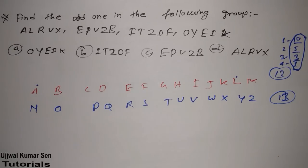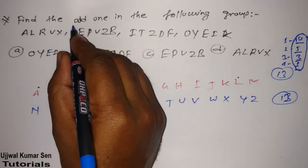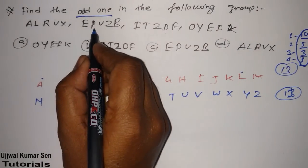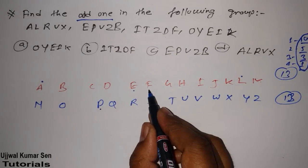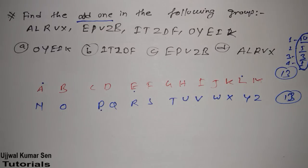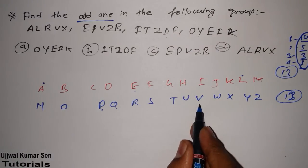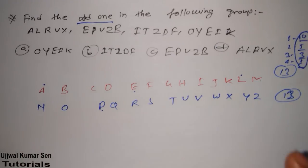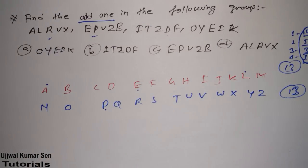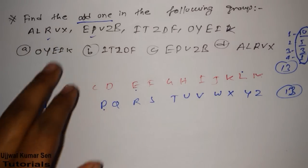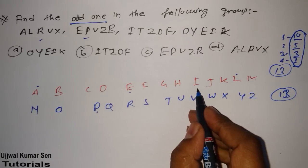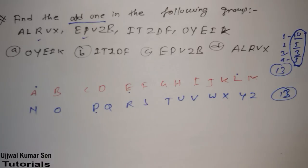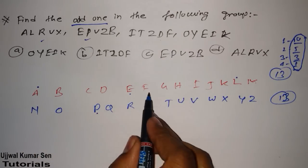Now we have to find out which option is odd. We need to check what series each option is maintaining. E to P: the gap is 10 — that is okay, following the same step. V to Z: gap is 3 — okay. Second option is also okay. Third: Z after Z we have B, so one letter gap — that is okay too. Then checking option with I: I to T — gap is 10, that is okay. Then checking the next gap of 5 — that is also okay. Then D, and after D we have F — gap is 1, okay.